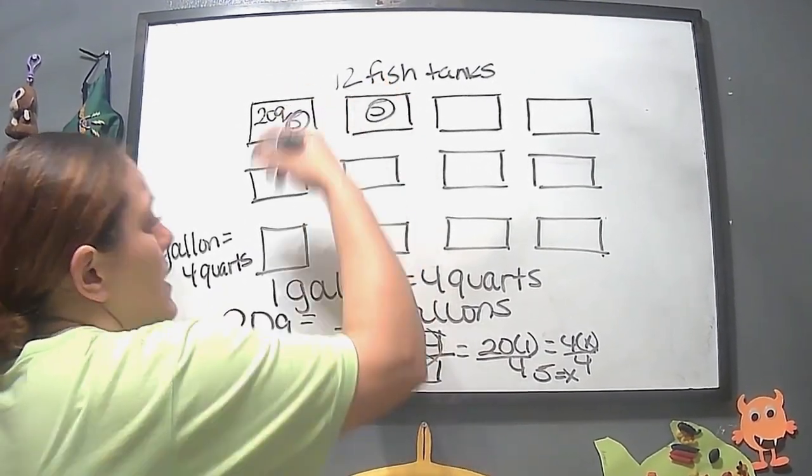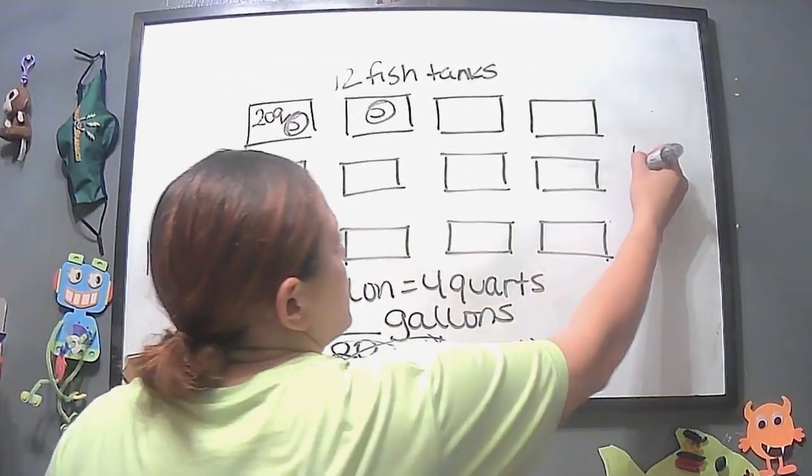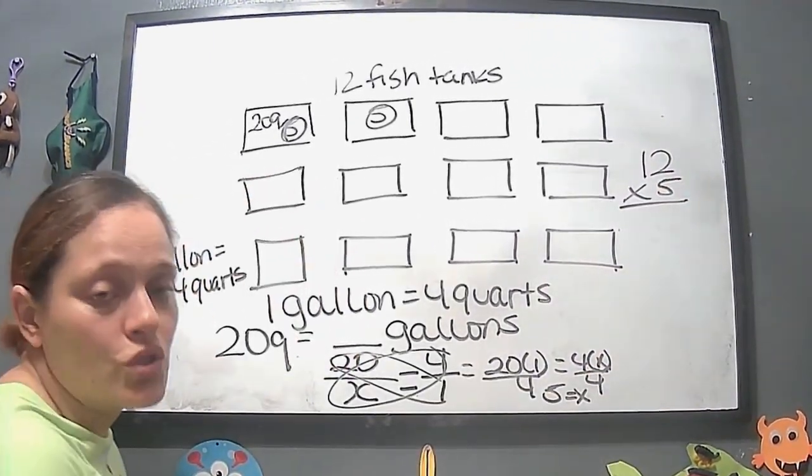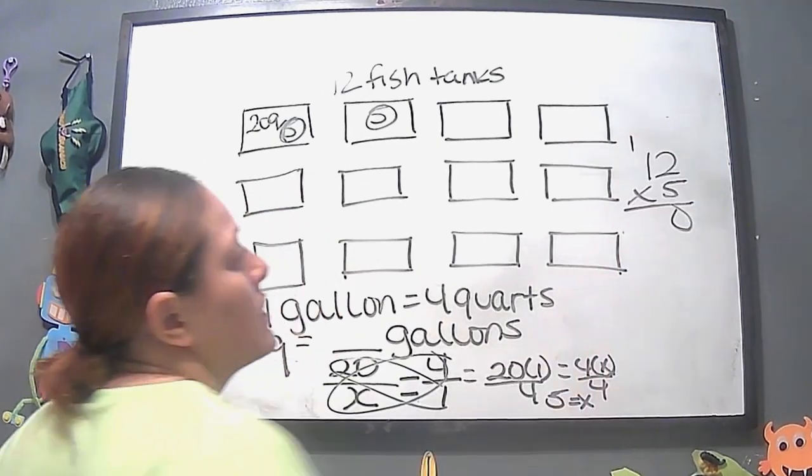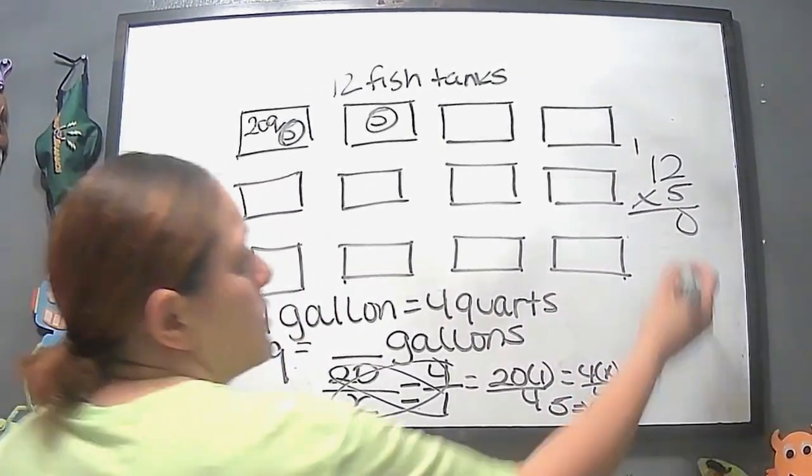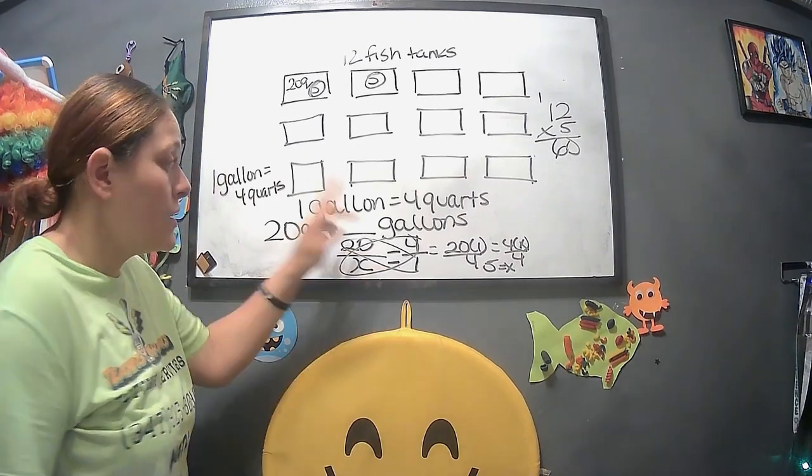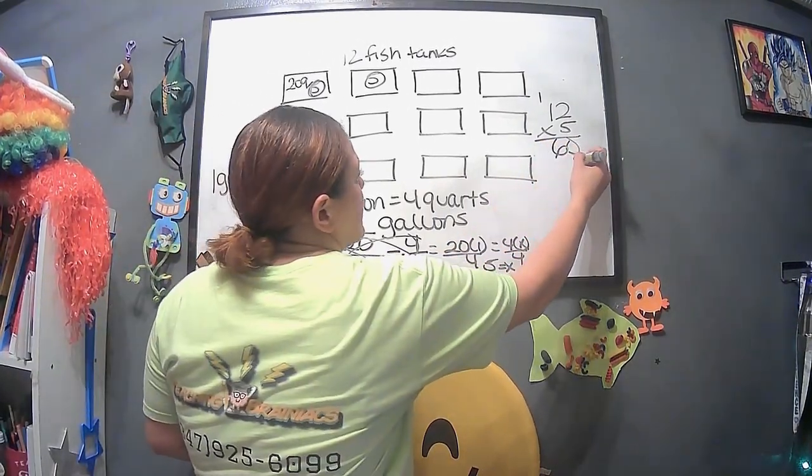So we have 5 gallons, and there's 12, so we can do 12 times 5, right? So 5 times 2 is 10, and 5 times 1 is 5, plus 1 is 6. So we're not done yet. This is just telling us that this is 60 gallons.